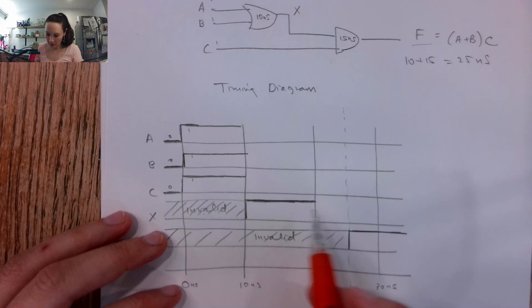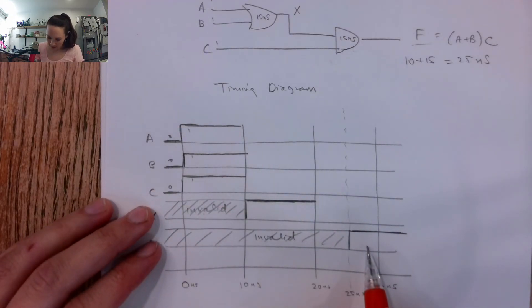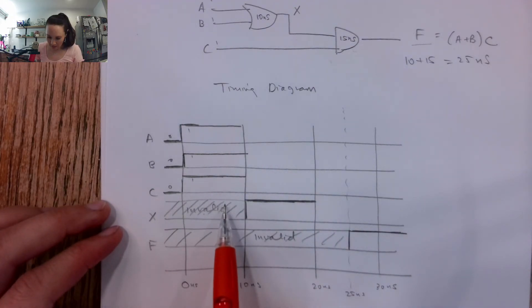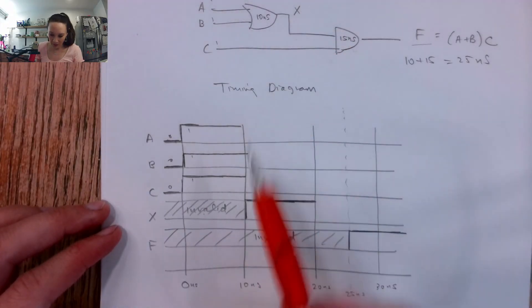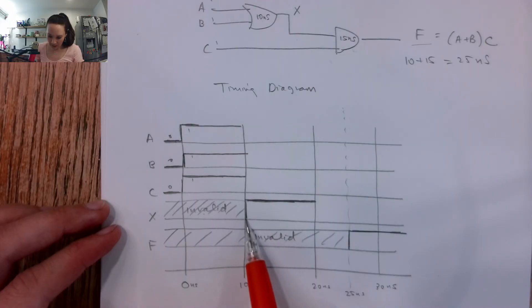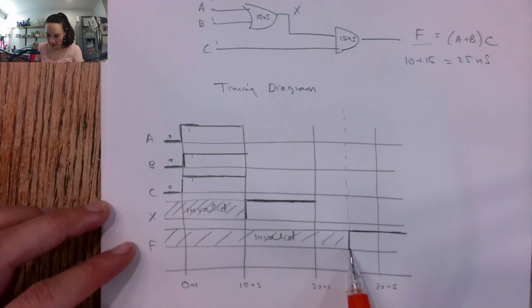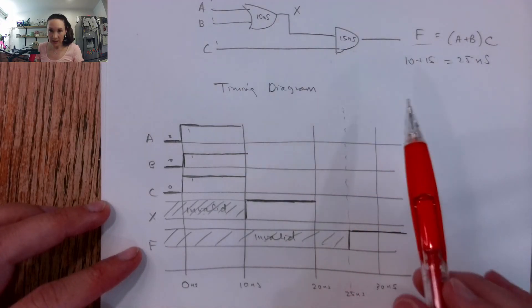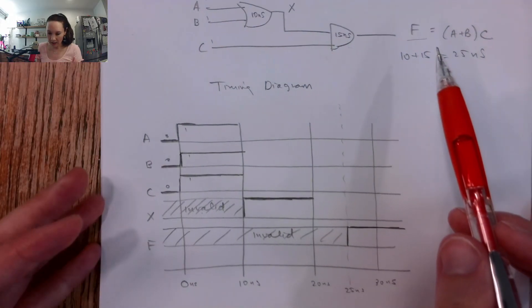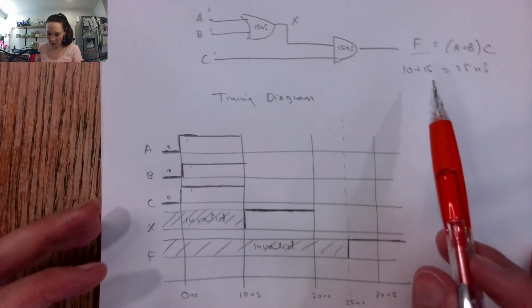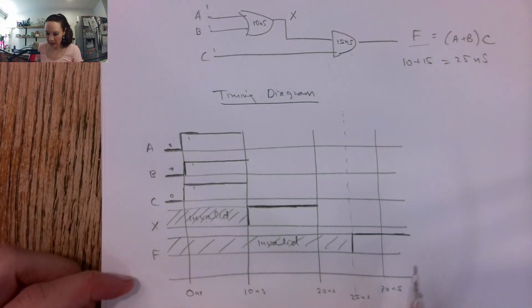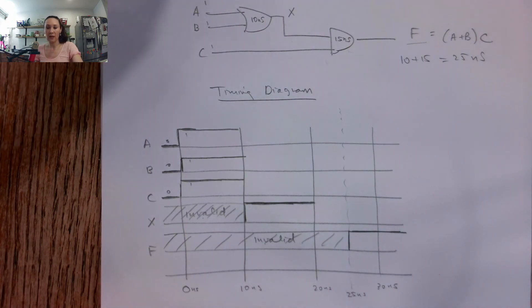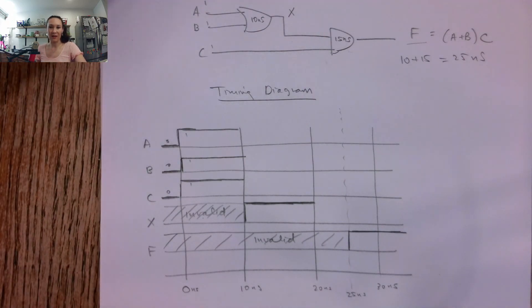So on our timing diagram, we can see that we shouldn't use this input from the output of the OR until 10 nanoseconds has elapsed, and we shouldn't trust this output on F until 25 nanoseconds has elapsed. So this is the idea of gate delay in our combinational circuits. Also, this is the first time you've seen the timing diagram, and this is going to be helpful as we start studying sequential circuits. Let me know if you have any questions.